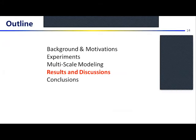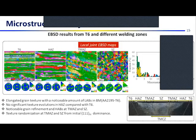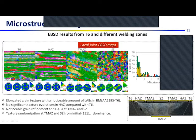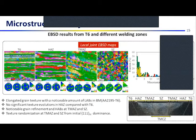EBSD results include elongated grain texture and a high fraction of low-angle grain boundaries at the T6 base metal condition of aluminum-lithium. The HAZ, which only undergoes a thermal process, shows no significant evolution in grain texture. We can see noticeable grain refinement with high-angle grain boundaries at the TMAZ and SC under the thermomechanical process, as well as texture randomization at the TMAZ and more noticeably in the SC, where we see completely randomized texture from the dominance of the {111} plane in the T6 material.